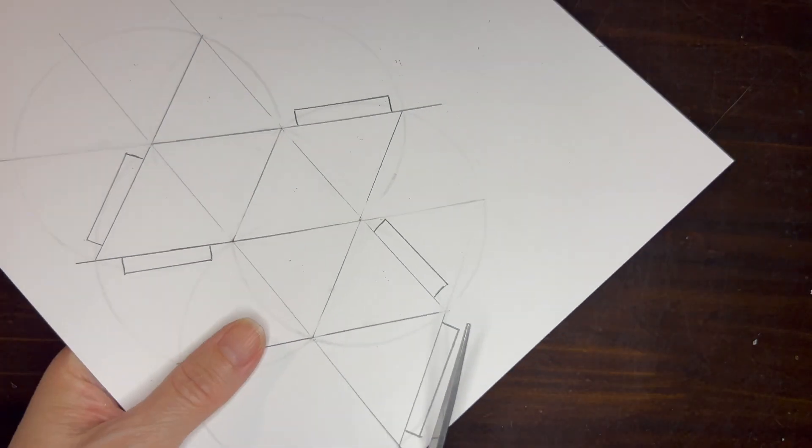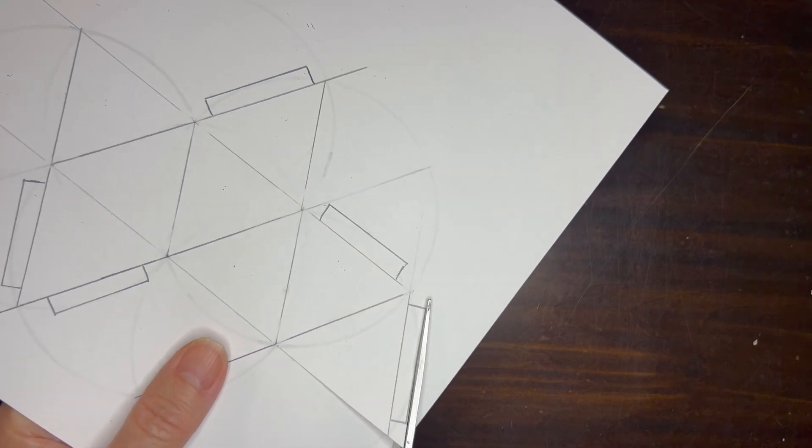Now we're going to cut out our shape and we want to make sure that we're cutting around those little tabs.